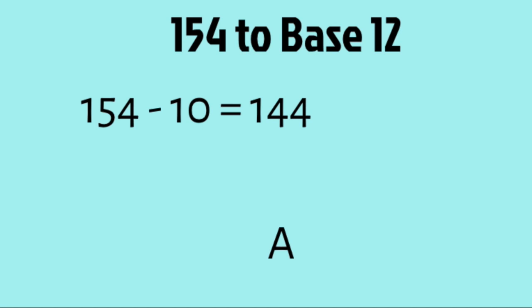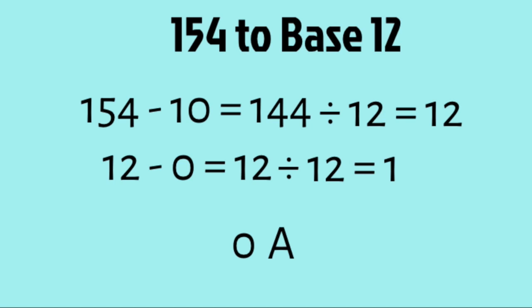And since 12 has a remainder of 0 when divided by 12, we subtract that off and get 12, and then we add a 0 to the beginning of our number. Then, we divide by 12 to get 1, and since 1 is less than 12, we just add it to the beginning of our number.